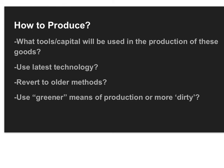Society also has to figure out how to produce things. So what tools and capital will be used in the production of these goods? Are we to use the latest technology or revert to older methods? Do we want to use some greener forms of production or more dirty? Do we care about the environment and to what extent? How much is it going to cost us extra to produce using greener means of production?